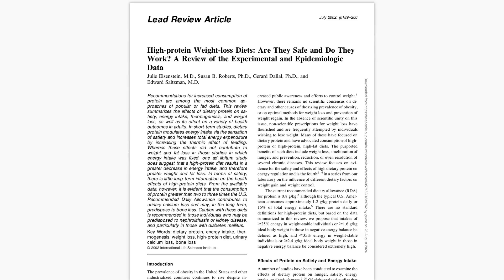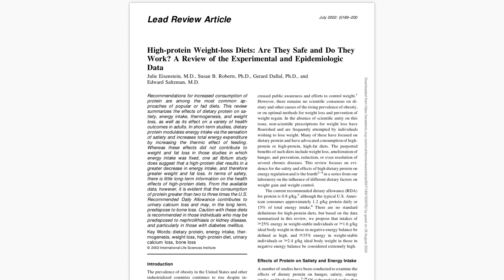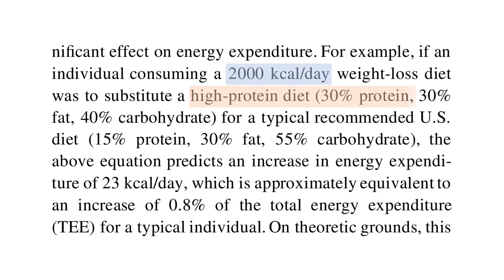Although these differences are not all that meaningful in practice. This review article reviewed the effects of high protein diets on various different outcomes, and based on the available data, they hypothesized that doubling protein intake during a 2000 calorie diet would increase daily energy expenditure via the thermic effect of food by around 23 calories per day.